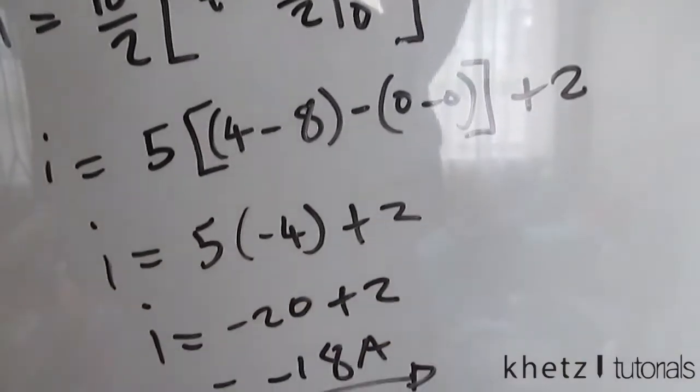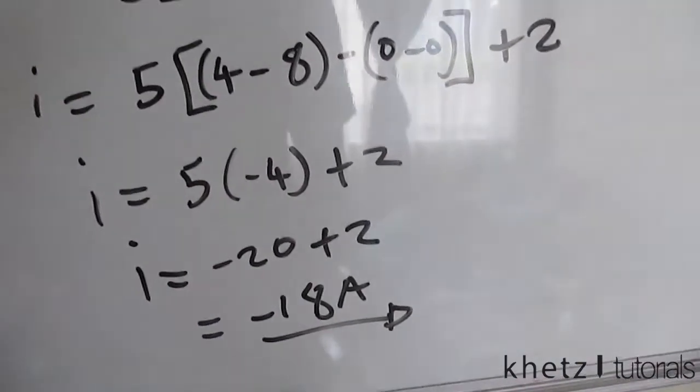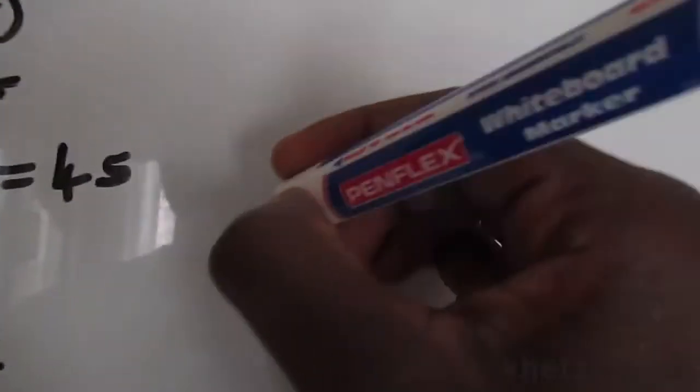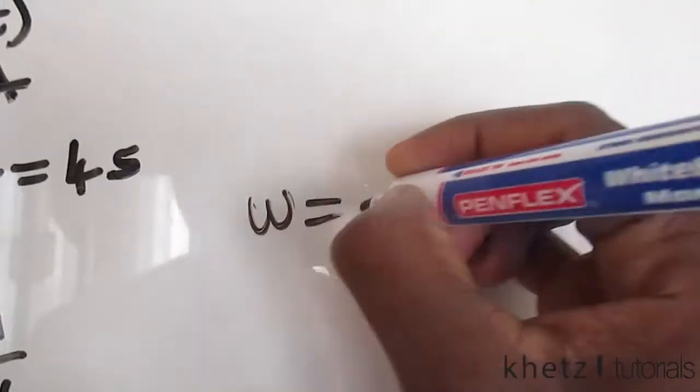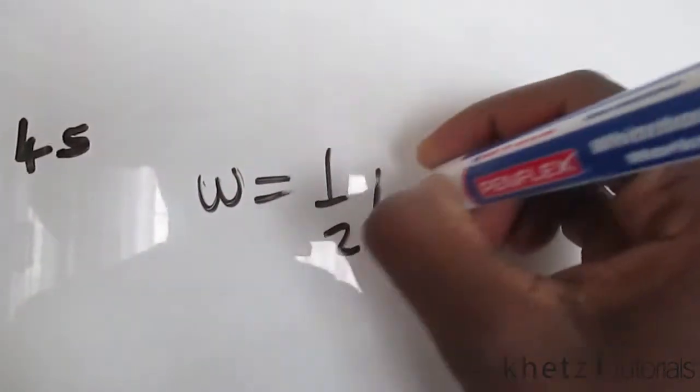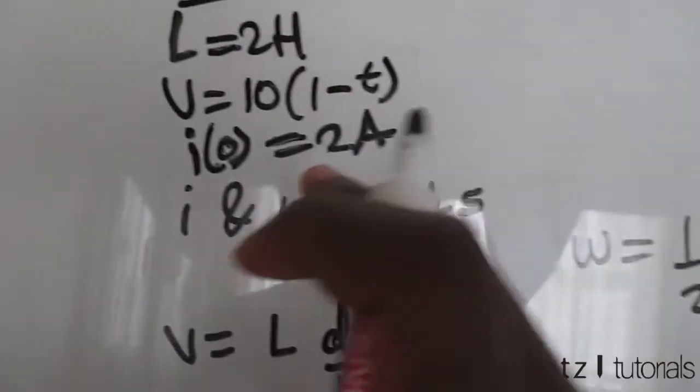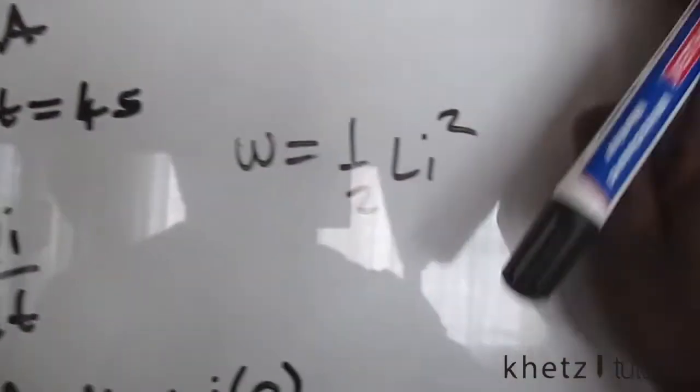So this is our answer for the first part of the question. Moving on to the second part of the question which asks us to find the energy, the formula for energy of an inductor is w equals to half L i squared.